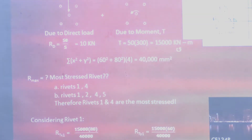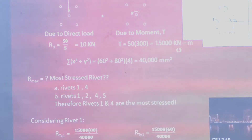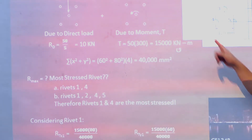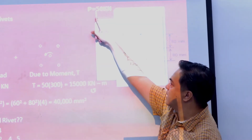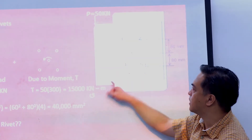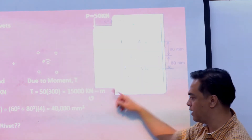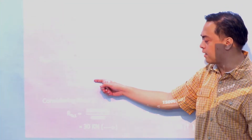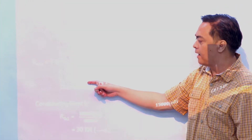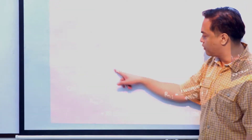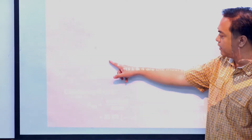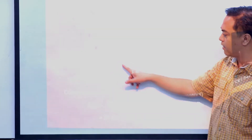Based on our guidelines, the first criterion is which rivet is nearest from the line of action — that would be rivets 2 and 4. The second criterion is which rivet is farthest from the centroid. The farthest rivets are 1, 2, 4, and 5, and they are all at equal distances from the centroid. The common rivets satisfying both criteria are rivets 1 and 4.